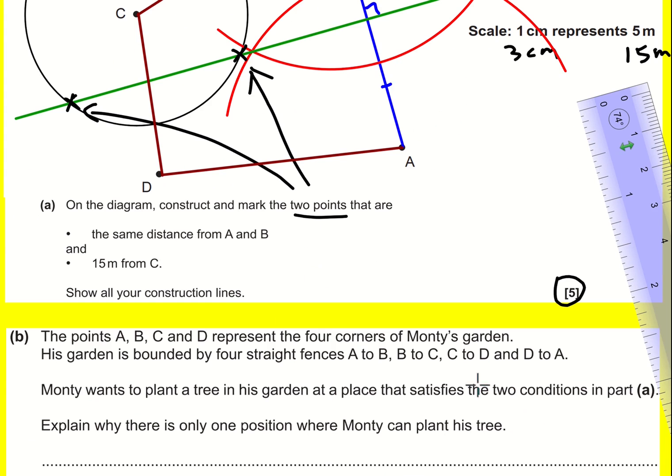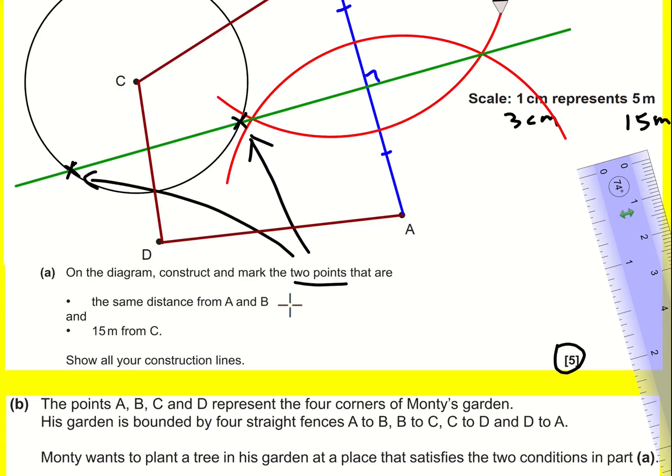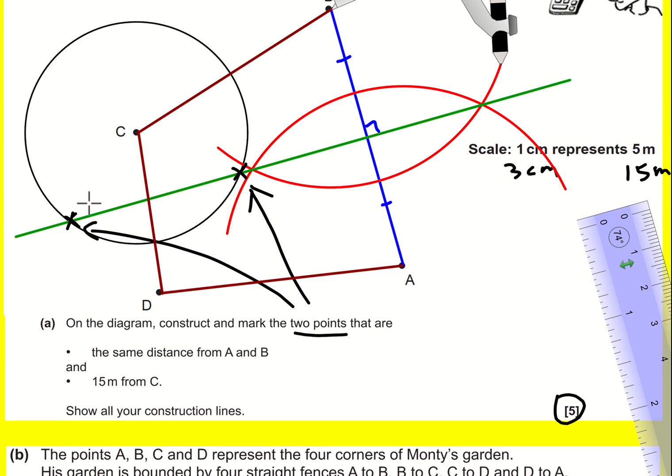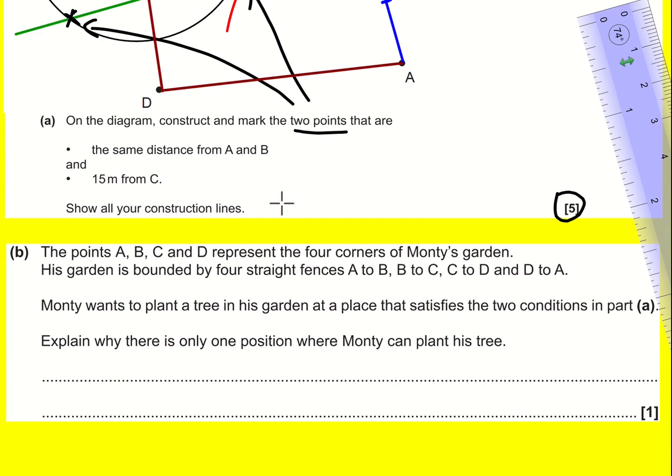He wants to plant the tree in his garden at the place that satisfies the conditions in part A. Why is there only one position where he can plant this tree? I've drawn the garden and you can see this tree is actually outside the garden. Because only one of the points is inside the garden.